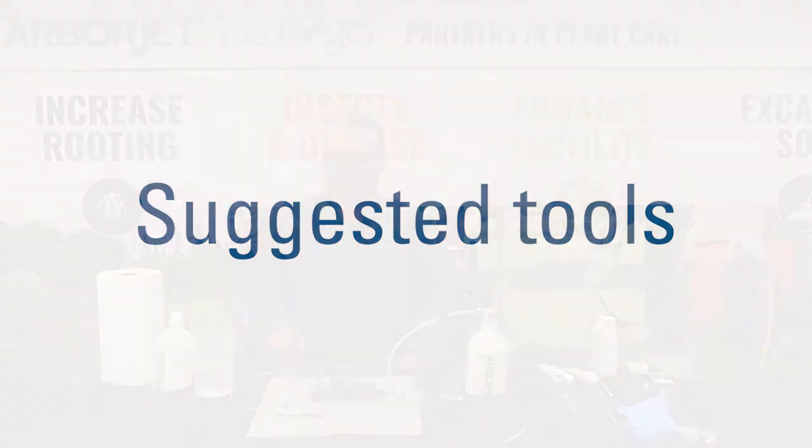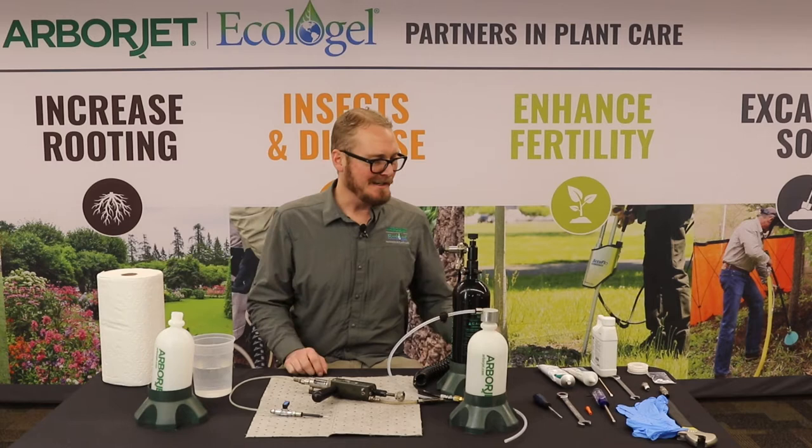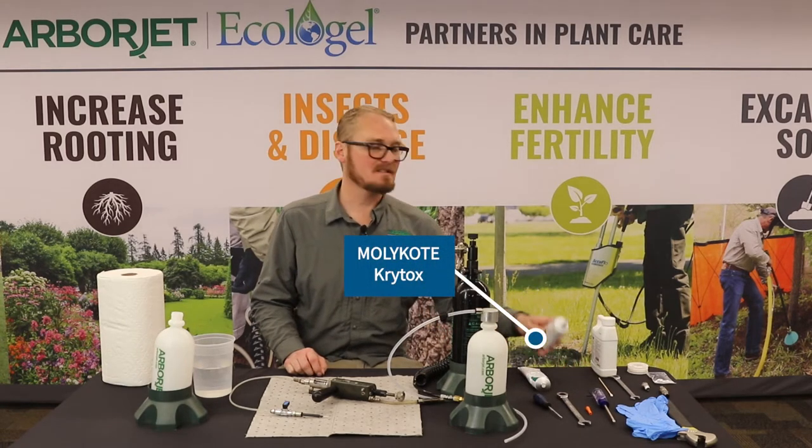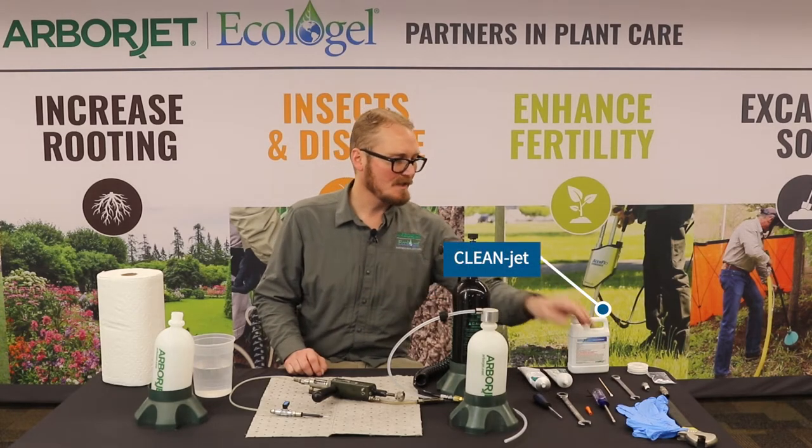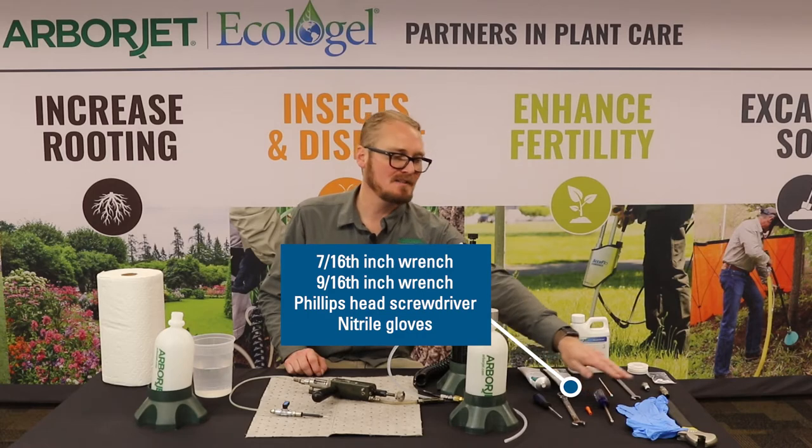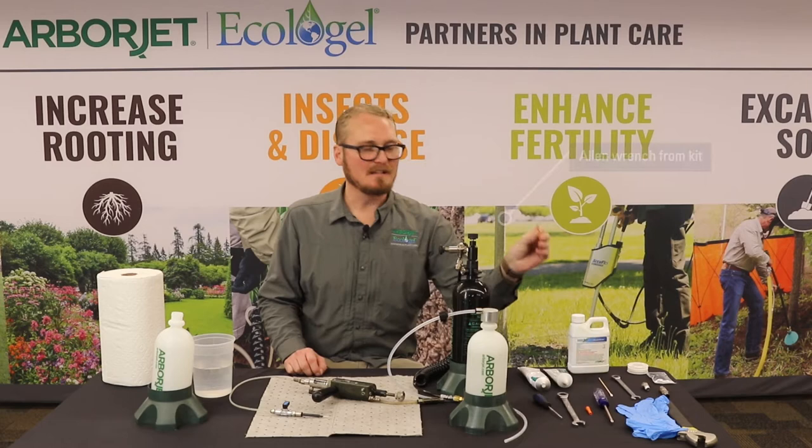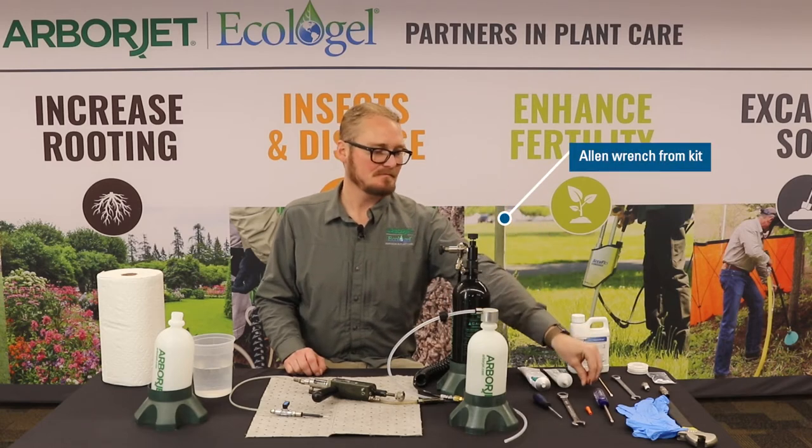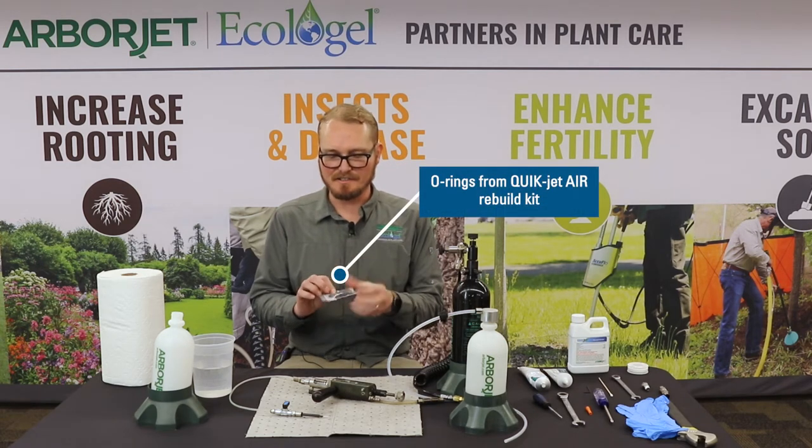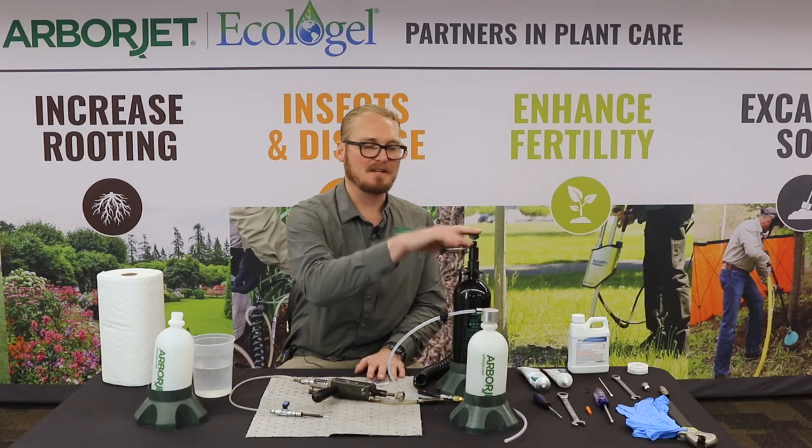A couple things you want to gather before you get started on the rebuild: make sure you've got some paper towels for cleaning things. We suggest you use Moly Coat and Krytox for the lubricants on the QuickJet Air, a little bit of CleanJet, 7/16ths and a 9/16th wrench, phillips head screwdriver, nitrile gloves, and the little allen wrench that comes with the kit. You're going to have your QuickJet Air rebuild kit which has all the seals and o-rings you'll need for the entire kit: for all the seals in the gun, the bottle cap, and the air tank.